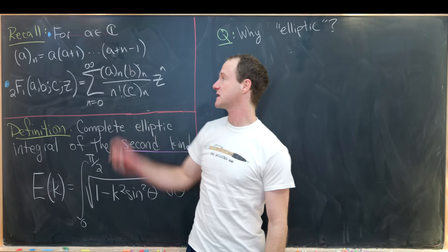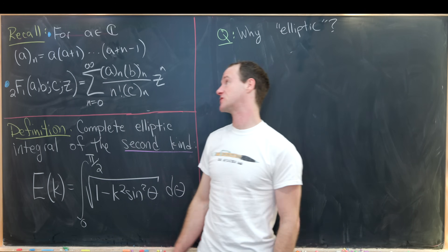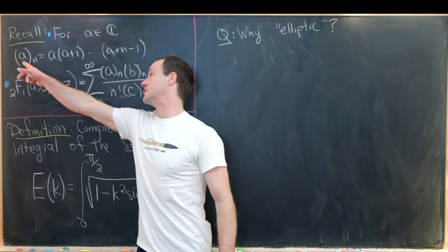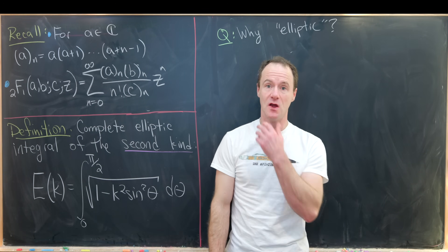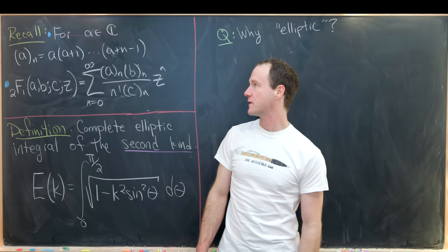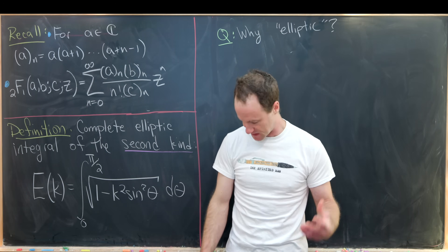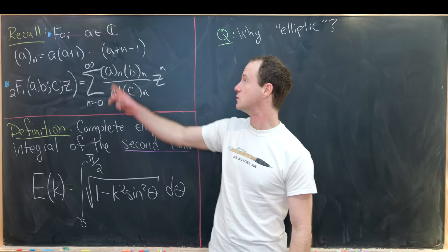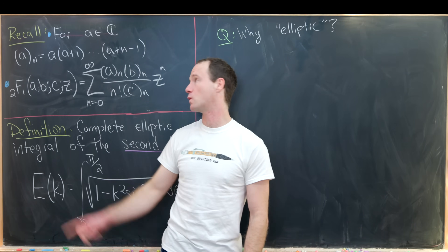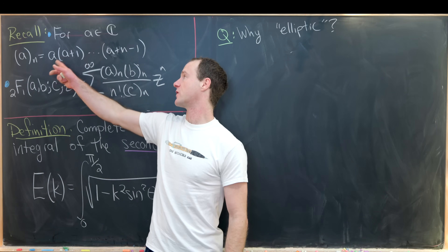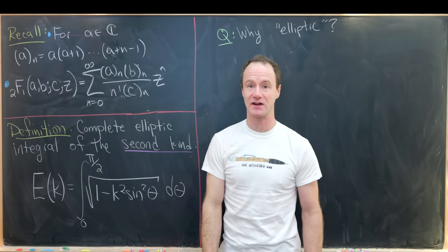For a complex number a, we define the rising factorial, denoted by (a)_n, as a times (a+1) times (a+2), all the way up to (a+n-1). So there are a total of n factors here.